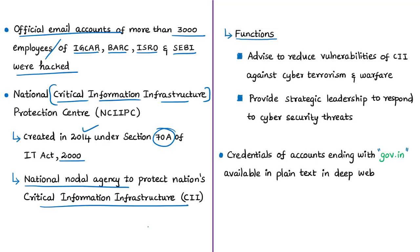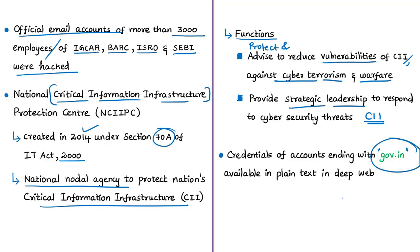Some important functions of NCIIPC include: protecting and delivering advice to reduce vulnerabilities of critical information infrastructure; protecting against cyber terrorism, cyber warfare, and other threats; and providing strategic leadership across government to respond to cyber security threats related to critical information infrastructure. The researcher analyzed data leaks for the last six years and found that more than 3,200 accounts ending with the gov.in format were hacked, and the login names and passwords of these accounts are now available in plain text — not encrypted — in the deep web.